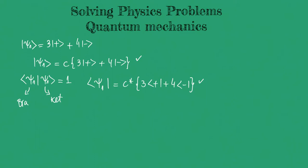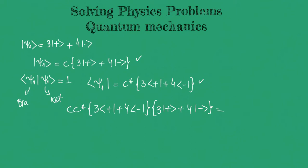So let's do that. Here we have c·c star that multiplies 3 bra plus plus 4 bra minus, which then multiplies 3 ket plus plus 4 ket minus. And it must be equal to 1 in order to define our normalization constant. Through complex numbers, we know that a complex number multiplied by its complex conjugate gives us the modulus squared. So here we have to do the simple math and multiply term by term.